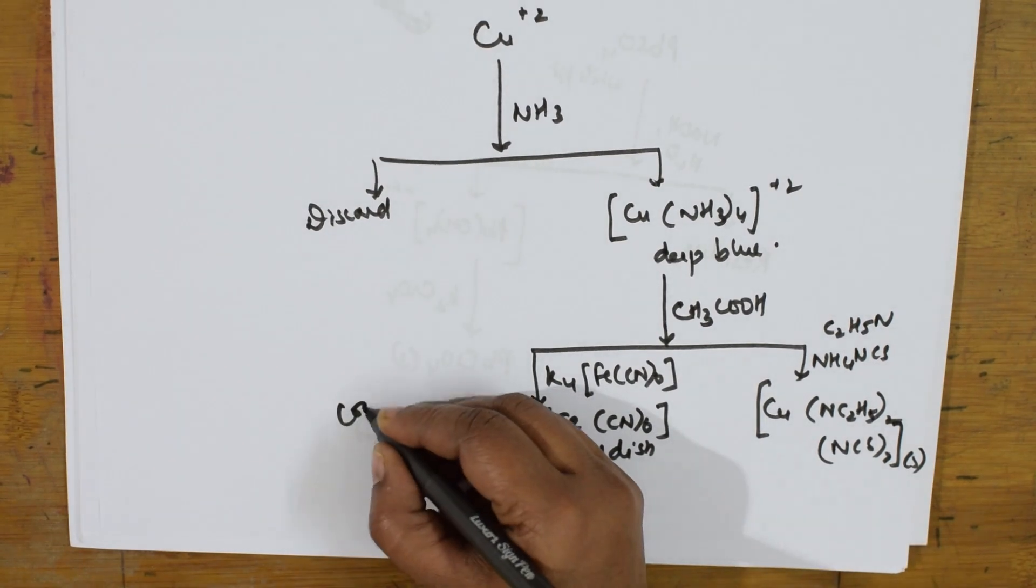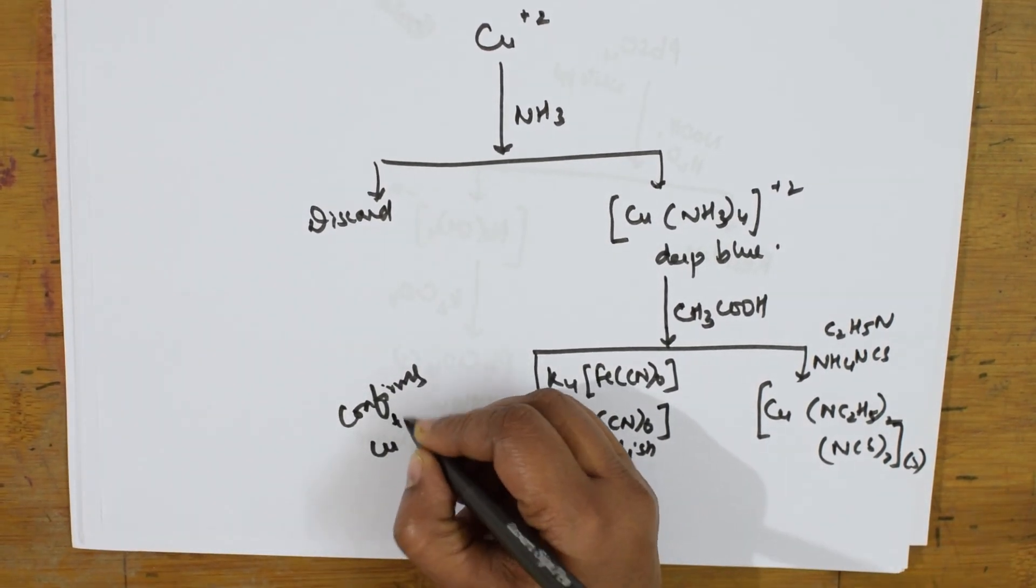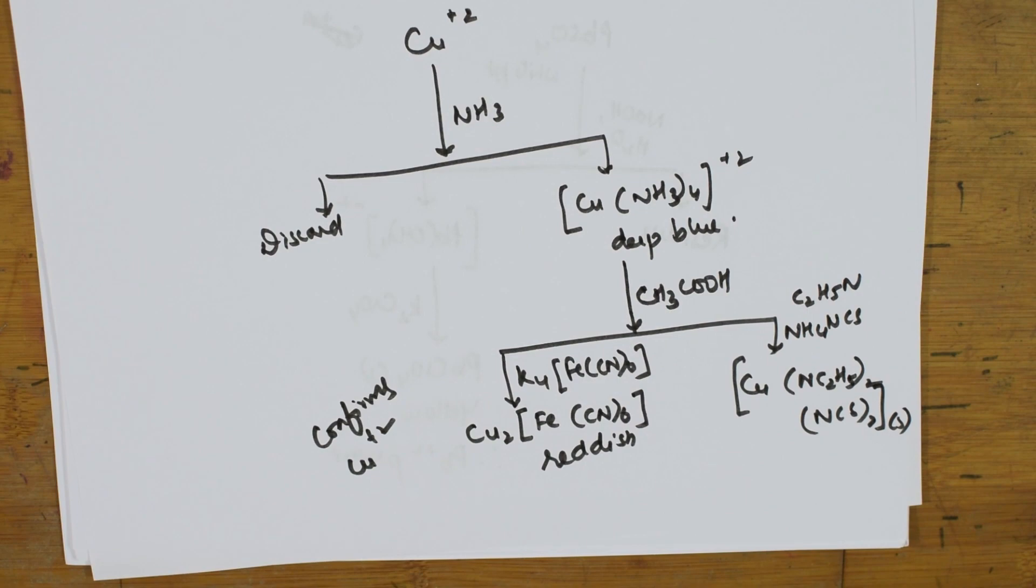You'll be getting the complex with this, Cu₂Fe(CN)₆. This is reddish and here you get a complex. This confirms the presence of, confirms Cu²⁺ cation.